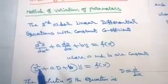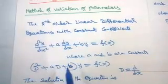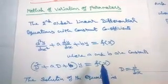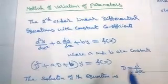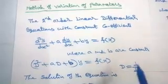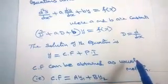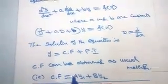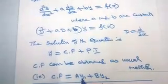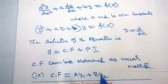(D² + aD + b)y = f(x), where capital D is d/dx. The solution of the differential equation is y = complementary function plus particular integral. The complementary function can be obtained by the usual method, that means CF = A·y1 + B·y2.